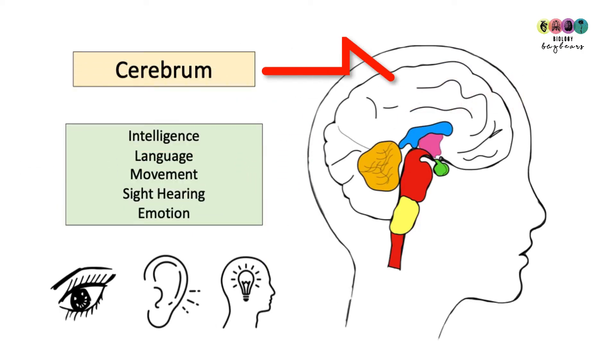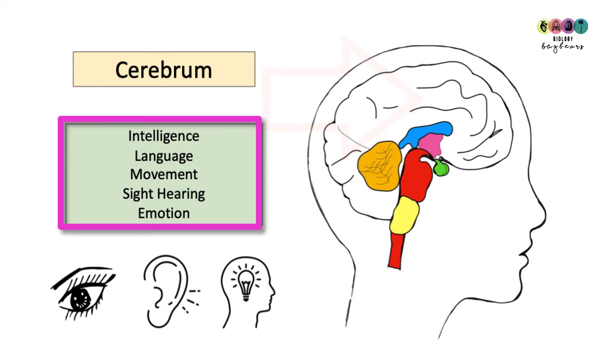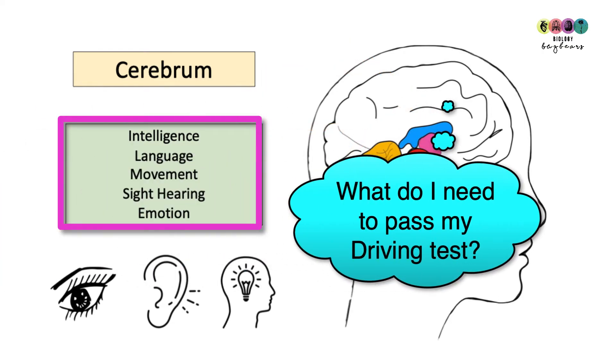The first part of the brain that we have to know about is the cerebrum. It's the largest part. We encountered it earlier in the video when looking at the two cerebral hemispheres. So what is associated with the cerebrum? What does it control? Well it controls intelligence, language, movement, sight, hearing, emotion.